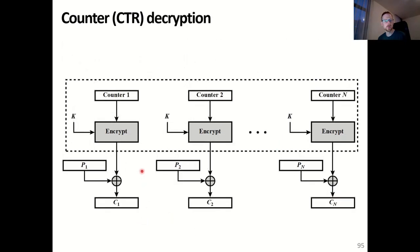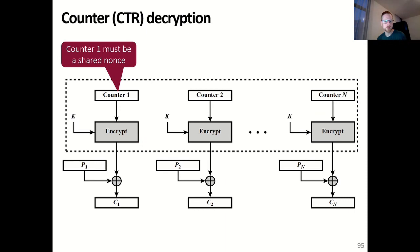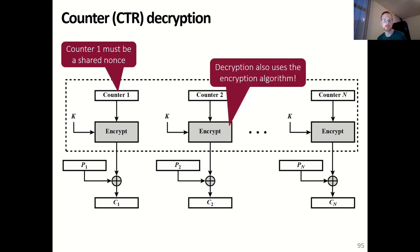Decryption of the counter mode is very straightforward and also uses the encryption algorithm. It encrypts the counter values just as during encryption, and then XORs the result with the ciphertext. This works because the XOR operation is invertible and is the inverse of itself — the encrypted value of the counter XORed with the plaintext equals the ciphertext, while the encrypted counter XORed with the ciphertext equals the plaintext. This allows us to perform both encryption and decryption using the block cipher encryption algorithm. The first counter must be shared; the other counter values can be derived from the first one by simply adding one to it.